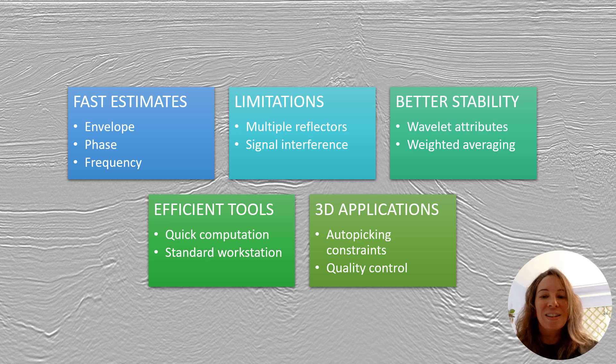And finally, this is particularly valuable for 3D interpretation: these attributes serve as excellent constraint volumes for auto-picking reflectors. They provide additional information that helps the automated systems better identify and track those continuous events throughout your seismic volume.